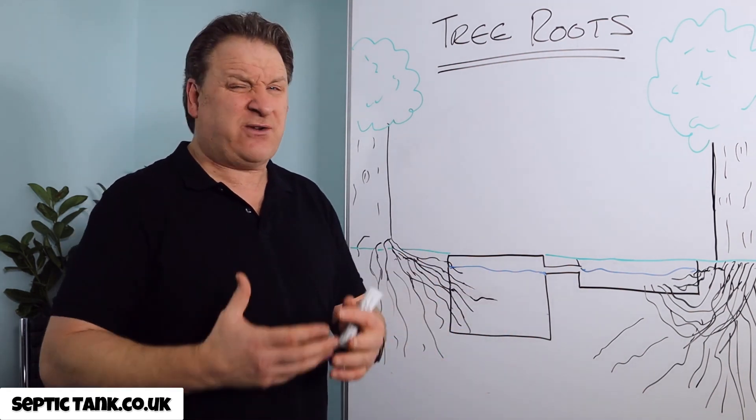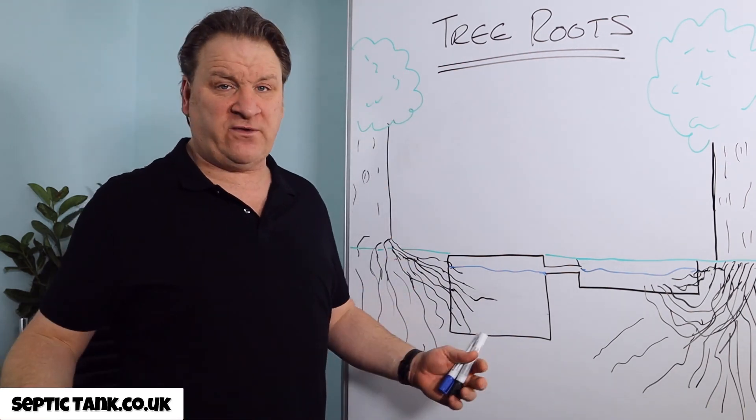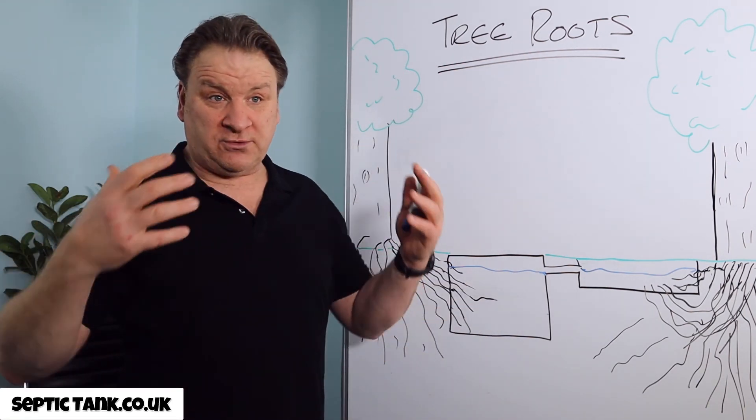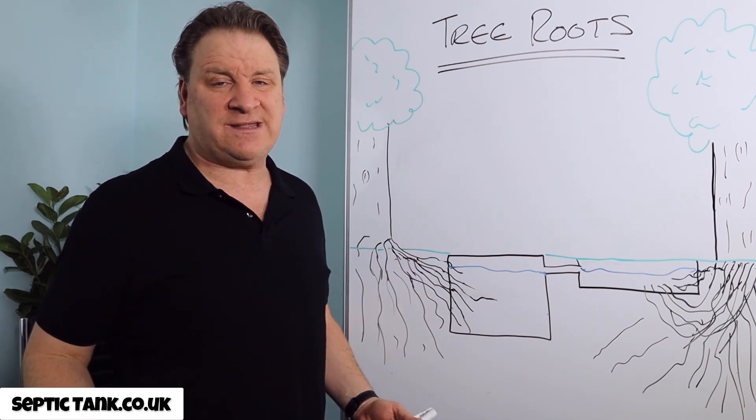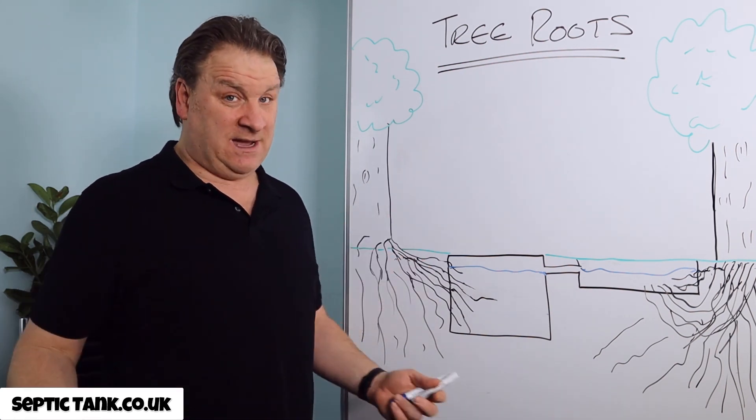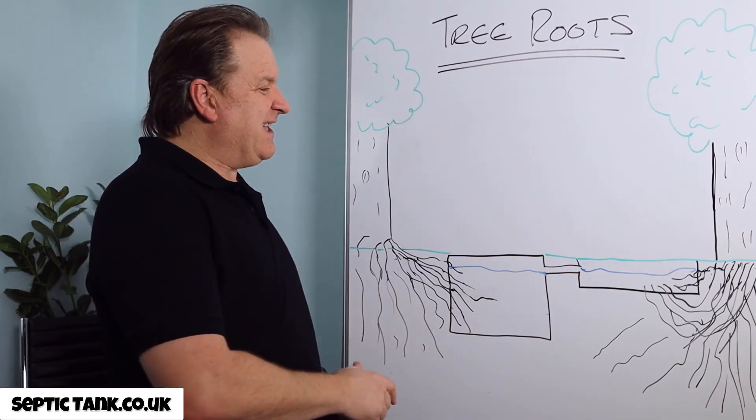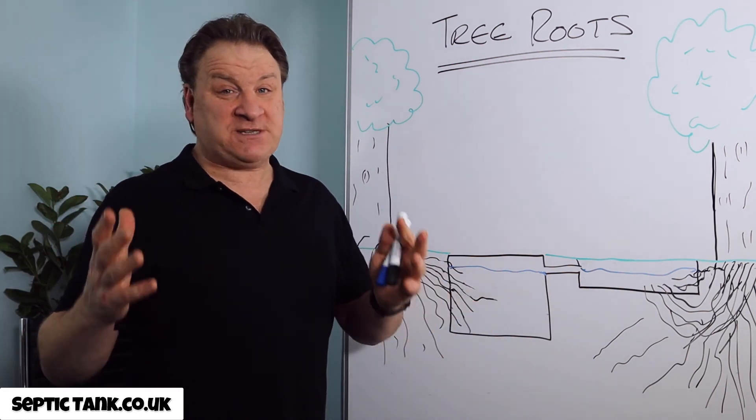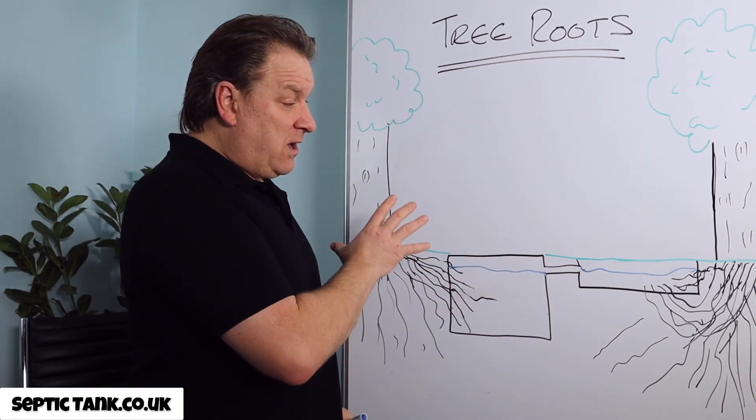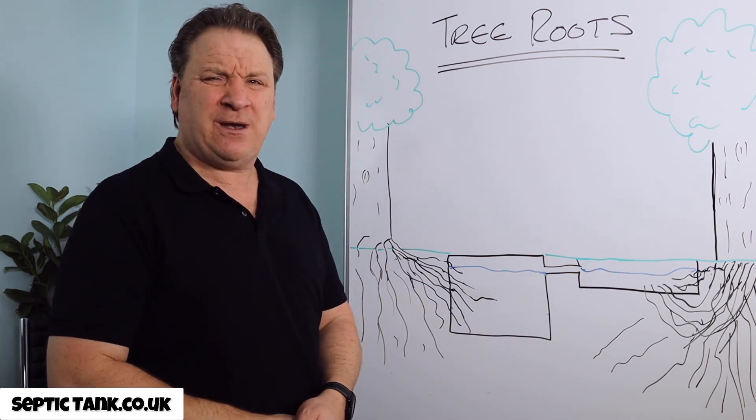So the bad thing is that over the course of 100, 200 years, the tree roots, they grow very slowly. This is why trees are like 300, 400, 500 years old. They will eventually cause the wall to collapse or break down. But let's face it, most septic tanks in the UK are only 50, 60 years old. So that I suppose is a downside of having a tree near your septic tank. That's what tree root damage can do, but it takes a long, long time.